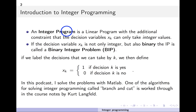Although this sounds like a small modification of what we've done before in linear programming, making the additional constraint that the variables are integers actually makes the algorithms a bit more complicated. There's a further kind of constraint we can add: instead of having the decision variables as integers, we can have them as binary.